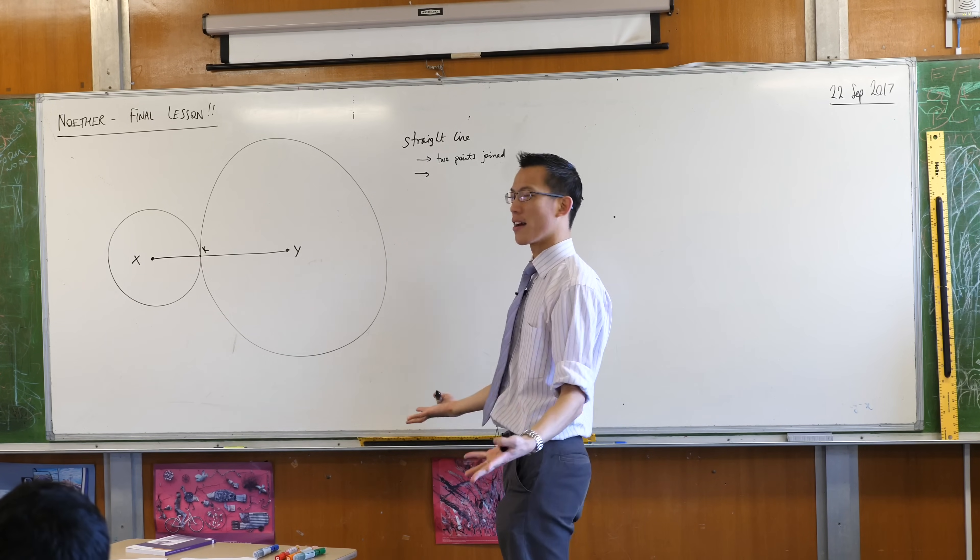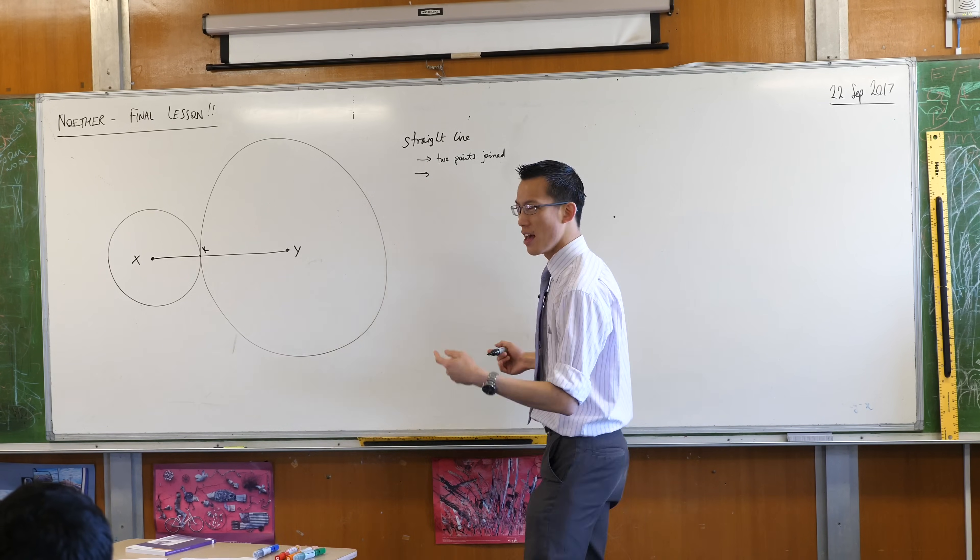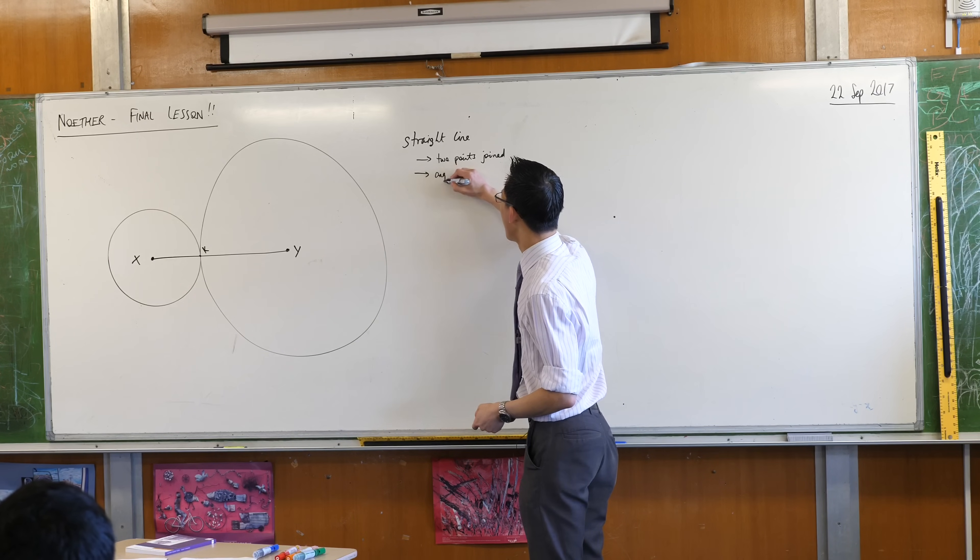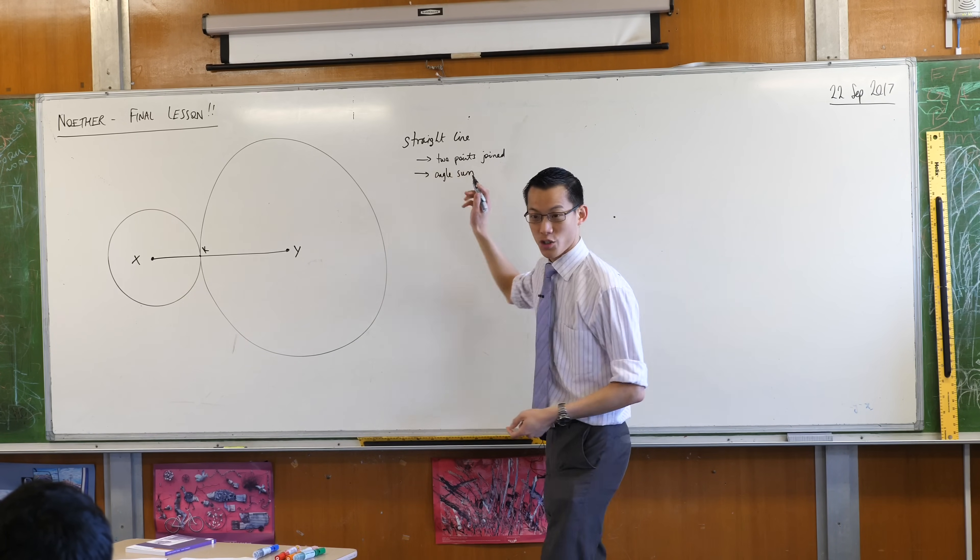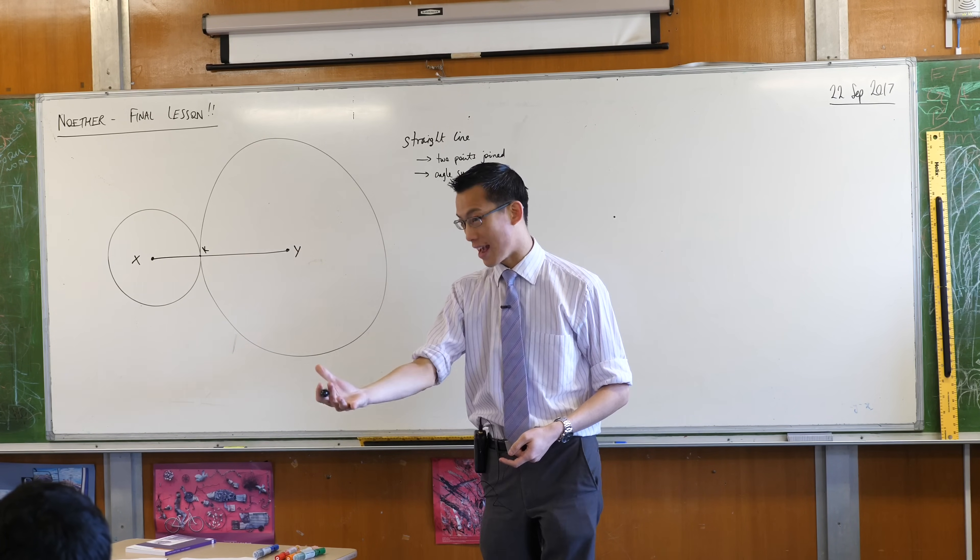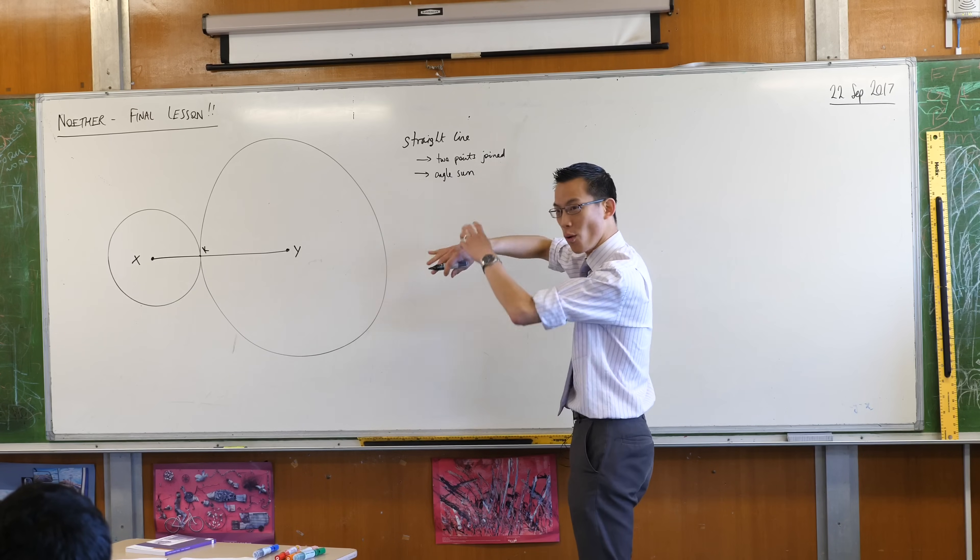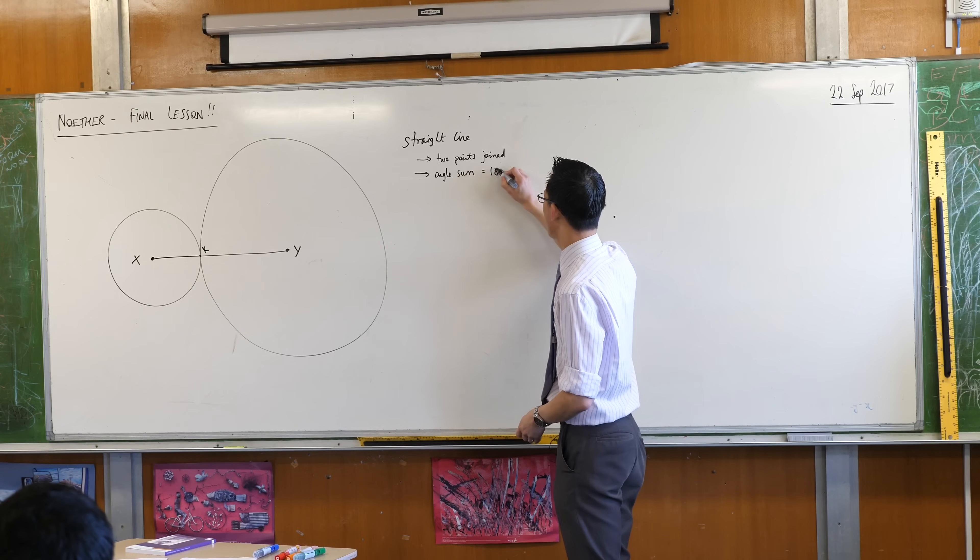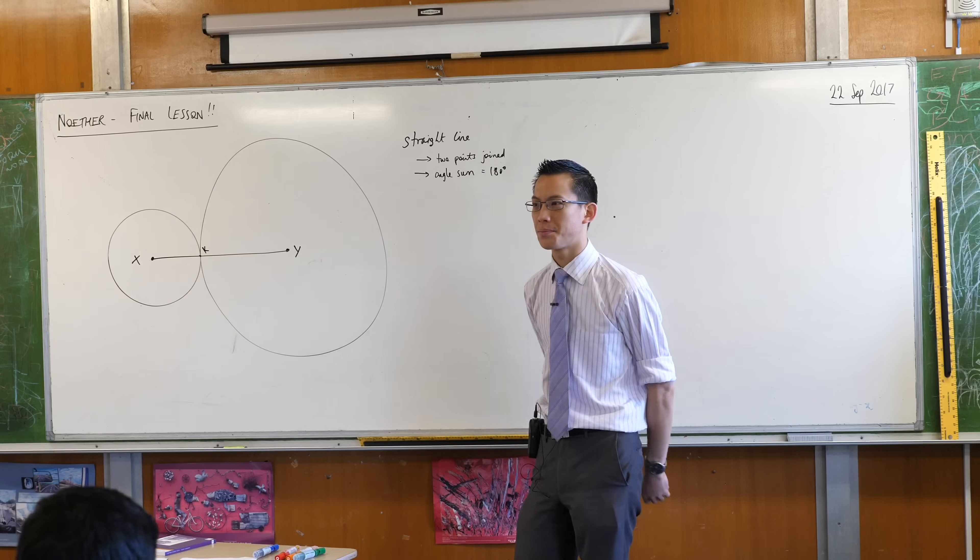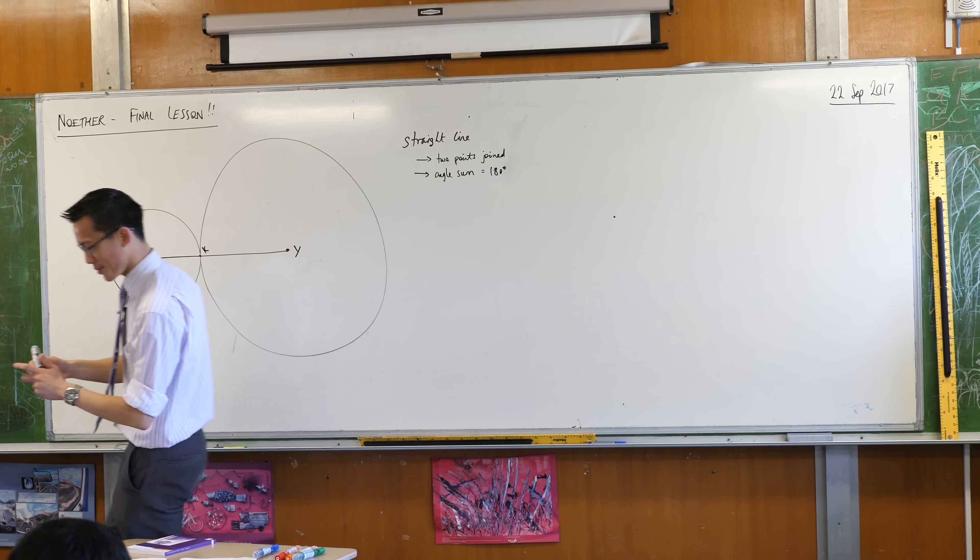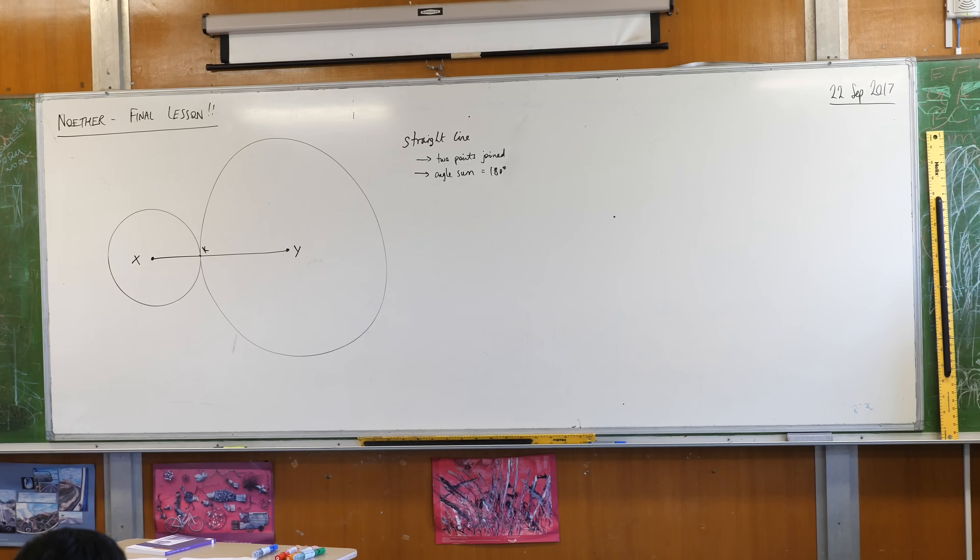Okay, what about 180 degrees? The angle sum of a straight line because a straight line can be thought of as an angle, right? The angle sum of all the angles on there is 180 degrees. Okay, good. What else can you tell me? What else? That's okay. Is there really nothing else? Come on, you know lots of things about straight lines.